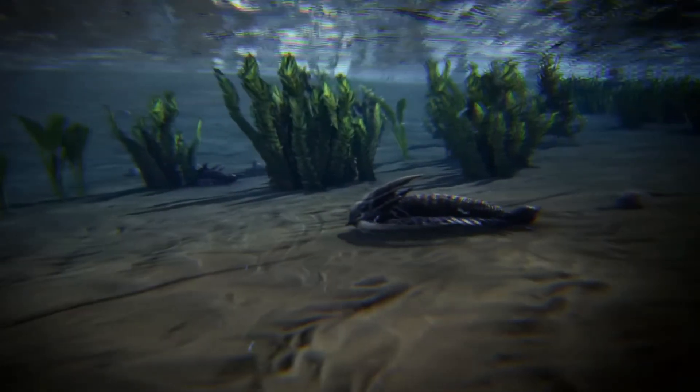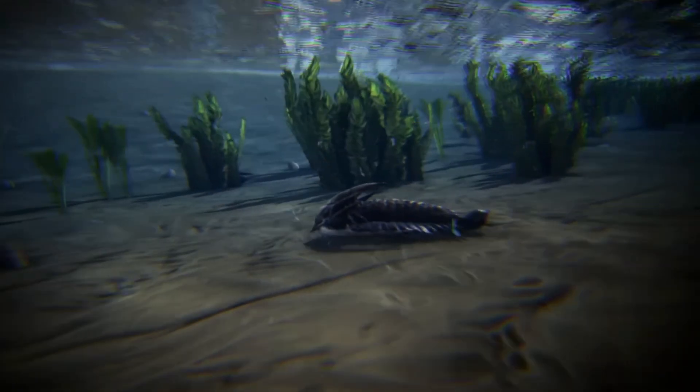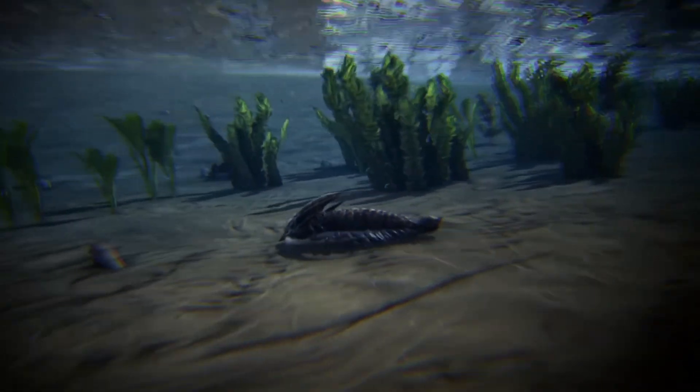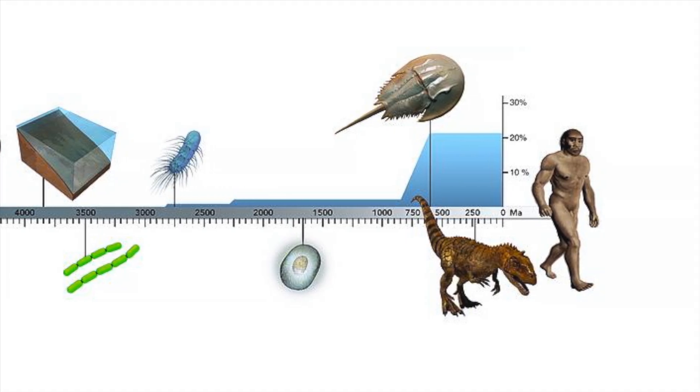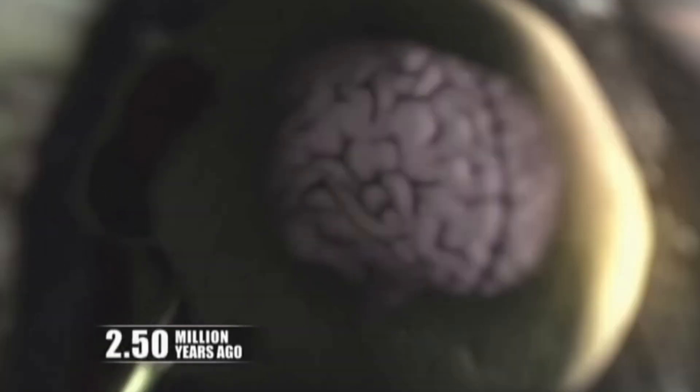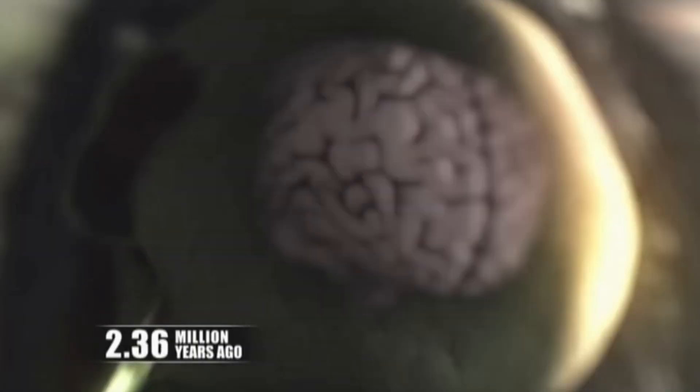But there is a counterargument to this thesis, which is that once the first plants and animals emerged on Earth, our species evolved in relatively short order. This somewhat weakens the argument that humans are an evolutionary anomaly. Because if technical intelligence rarely evolves, then why did it emerge so quickly following the appearance of multicellular life?